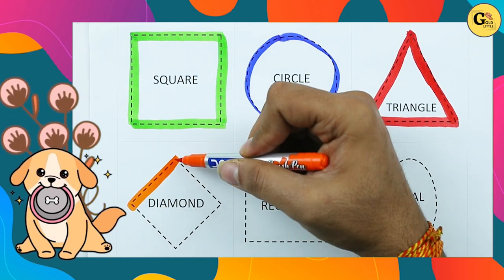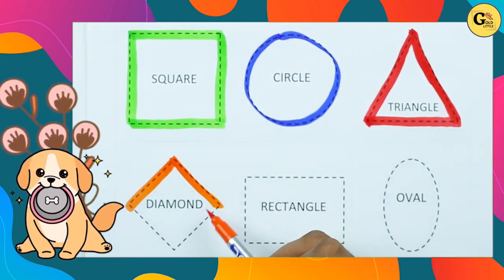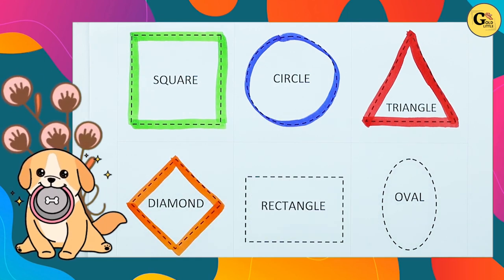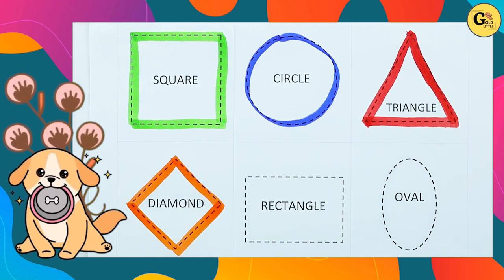One sliding line, two sliding lines, three sliding lines, four sliding lines. It's a diamond, orange color diamond.